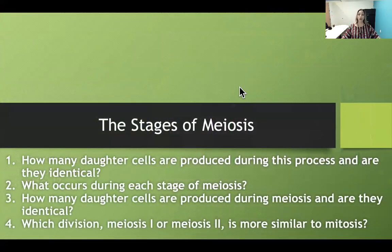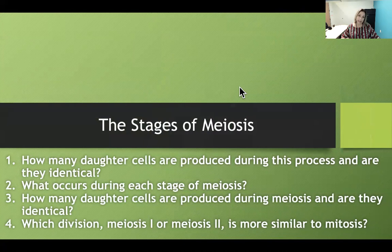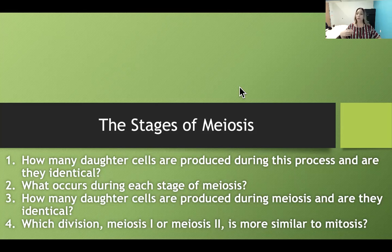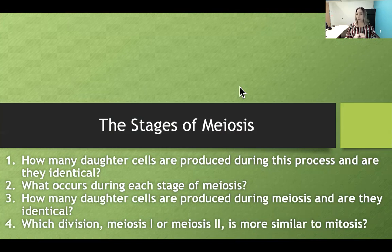Now we go into the stages of meiosis. You need to be able to tell me how many daughter cells are produced and whether they are genetically identical. You need to explain what occurs during each stage of meiosis and identify whether meiosis one or meiosis two is most similar to mitosis. There are two rounds of cell division called meiosis one and meiosis two.